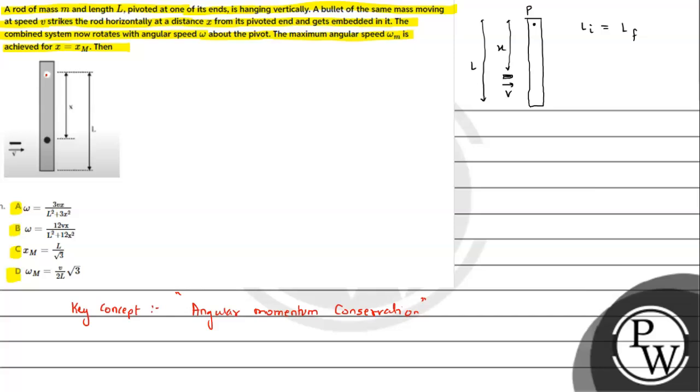So first of all, we can talk about point P which will be possessed by this bullet. So we can write MVX, where M is the mass, V the velocity, and X the perpendicular distance from P point. And that will be equal to the final momentum. Basically, this rod will have a tendency to rotate now with angular velocity omega.